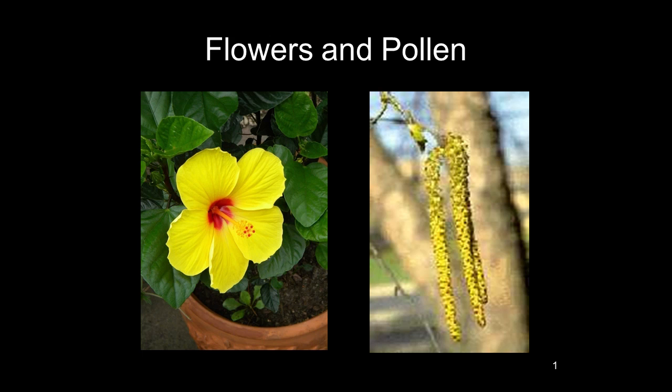Right now we're going to talk some about pollen. Pollen is the male reproductive part of seed plants. Pollen is transferred from the male part to the female part by either insects or by the wind. Here's an example of an insect pollinated flower, and you can see it has bright, showy petals.